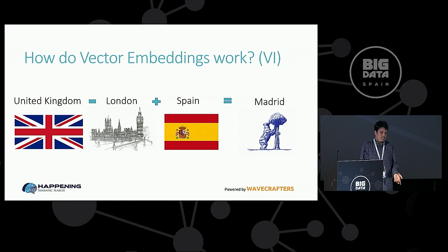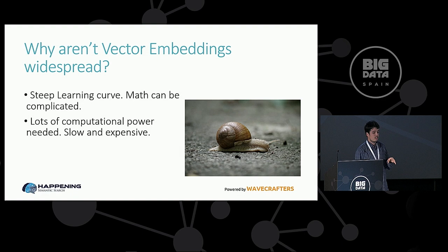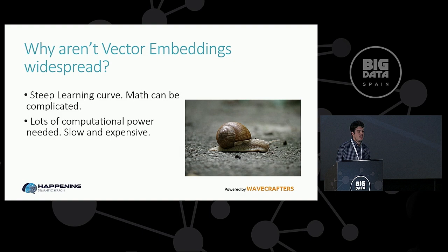So if vector embeddings are so good, why are they not used? Well, first of all, there's quite a steep learning curve. We have seen the basic stuff — cosines, adding, subtracting — that's easy. But if you want to do more advanced development, it can be quite complicated. Also, the main problem is the computational power you need. It's slow and it's expensive. Remember that we are doing operations on very large vectors, and if you have a large database of 10 million documents, you need to do 10 million operations for every search.